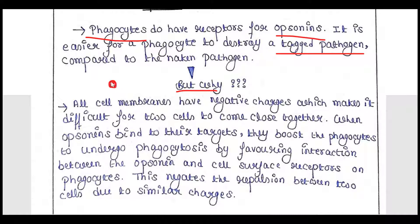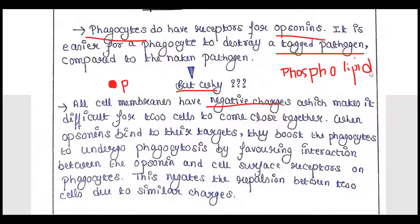Why is this? All cell membranes have negative charges, which makes it difficult for two cells to come close together. Pathogens also have cell membranes with negative charges because cell membranes are made up of phospholipids, and those phospholipids give the membrane its negative charge.